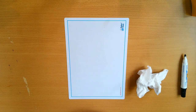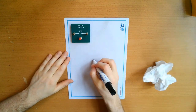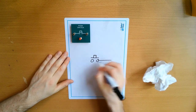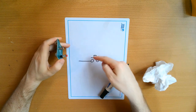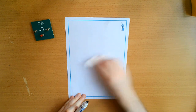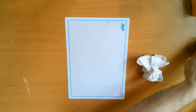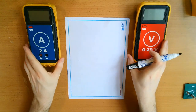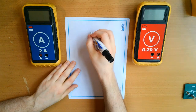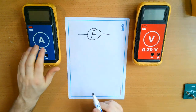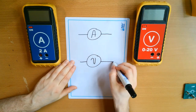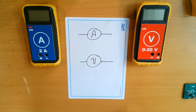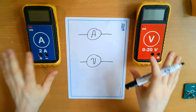Three more components to introduce. First, a push switch — you press it down to engage the connection, and its symbol shows exactly that action. We also have an ammeter — a circle with a big A in the middle — which represents current. And a voltmeter — a circle with a V — which represents potential difference, sometimes referred to as voltage. We won't go into what these two devices do here; that will be covered in another video.